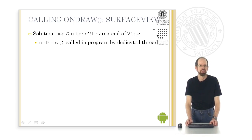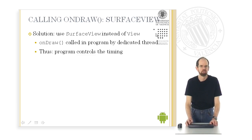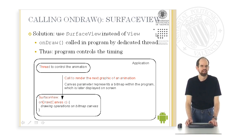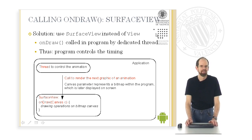The solution to this problem is to use the class SurfaceView instead of View. For the class SurfaceView, the onDraw method is called in the program itself by a dedicated thread, and therefore the program controls the timing. We have a thread within the application which calls the onDraw method of the SurfaceView object in order to render the next graphical step of the animation. The canvas parameter represents a bitmap within the program which is then later displayed on the screen.